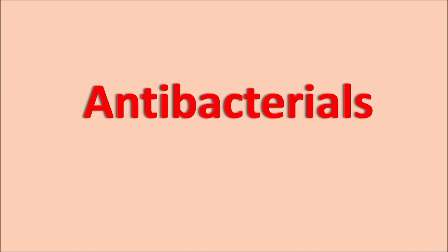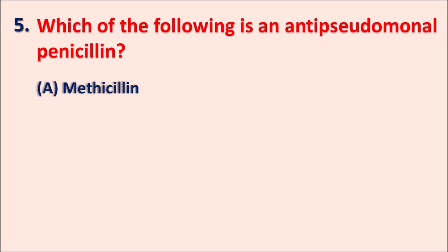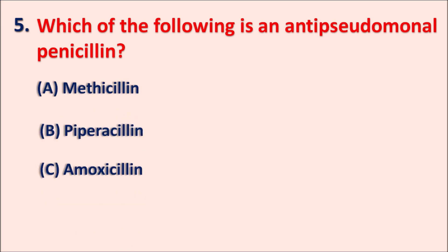Question five: which of the following is an anti-pseudomonal penicillin? Options are: A) methicillin, B) piperacillin, C) amoxicillin, and D) penicillin V.